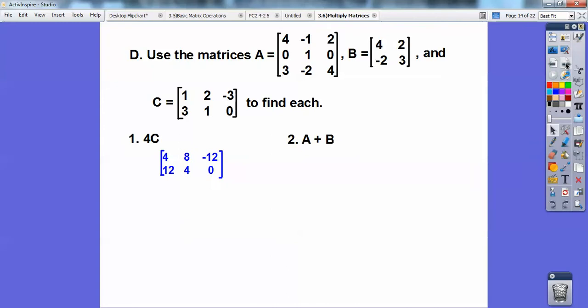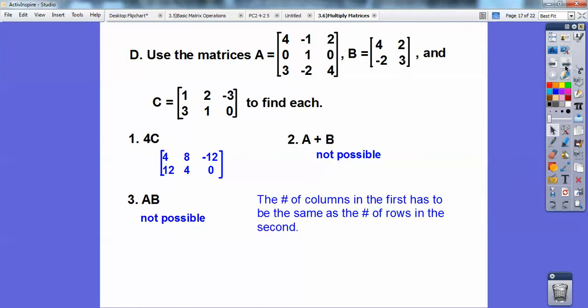So find A plus B. A plus B would be this one plus this one. Well, this is not possible. This is a 3 by 3. This is a 2 by 2. I can't add those. It's not possible. A times B, okay? Is the number of columns here, 3, equal to the number of rows here, 2? And that's a big fat no, so this one's not possible either. Number of columns don't equal the number of rows. That's why it's not possible.